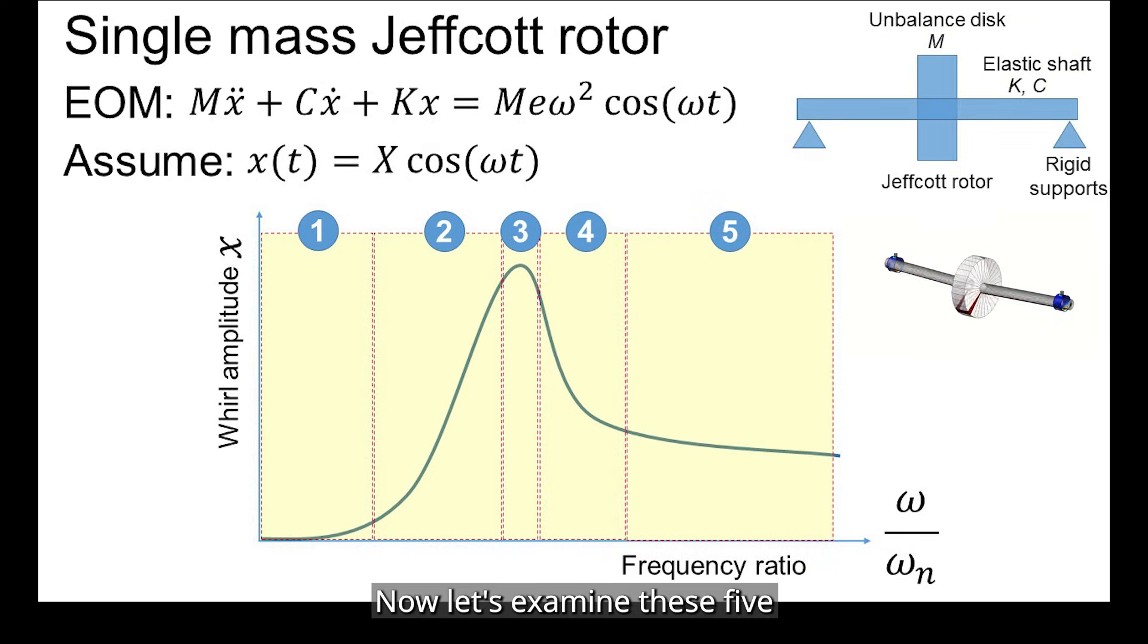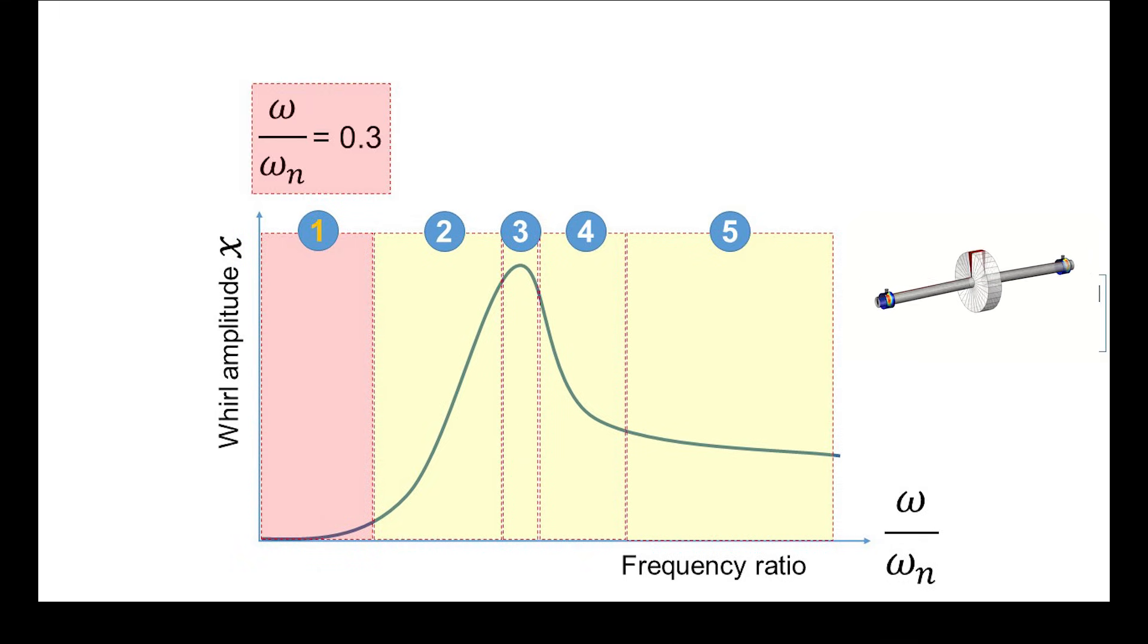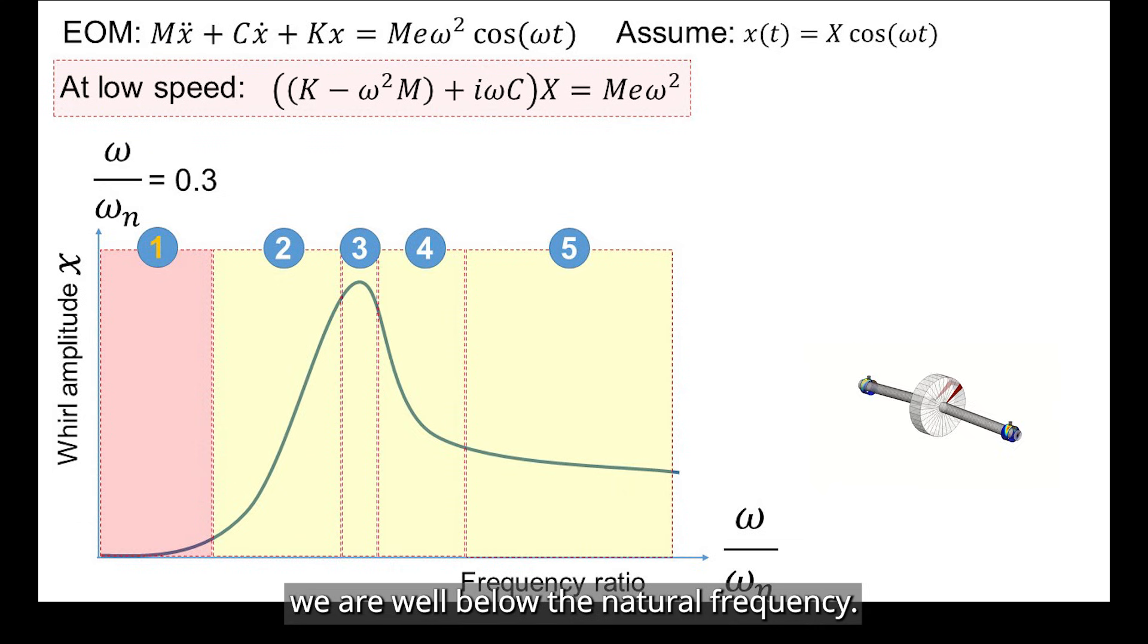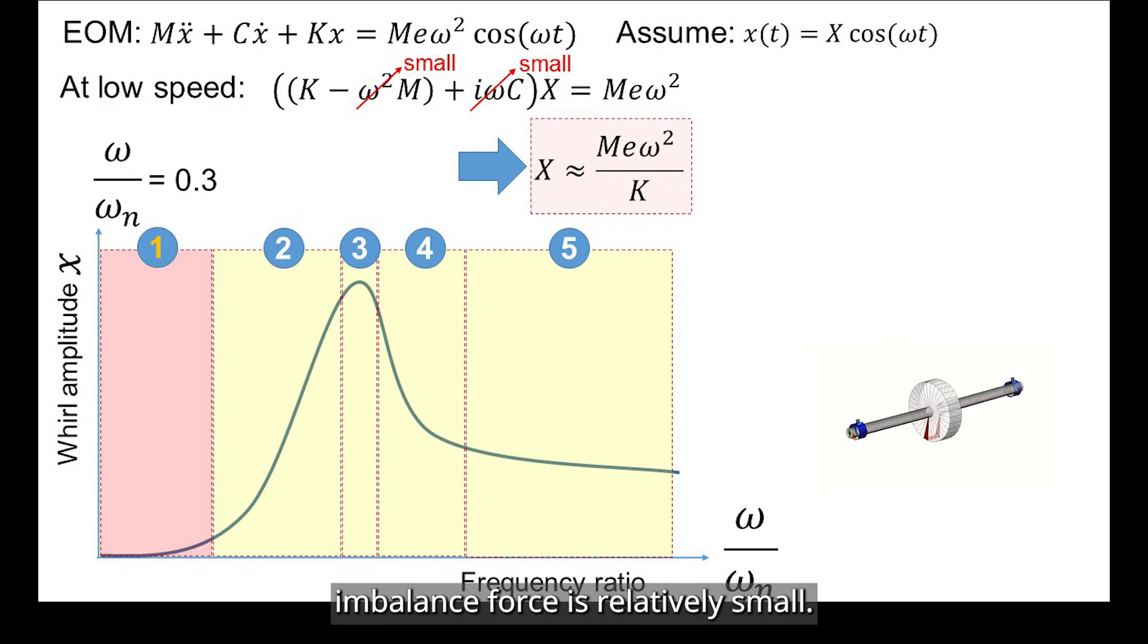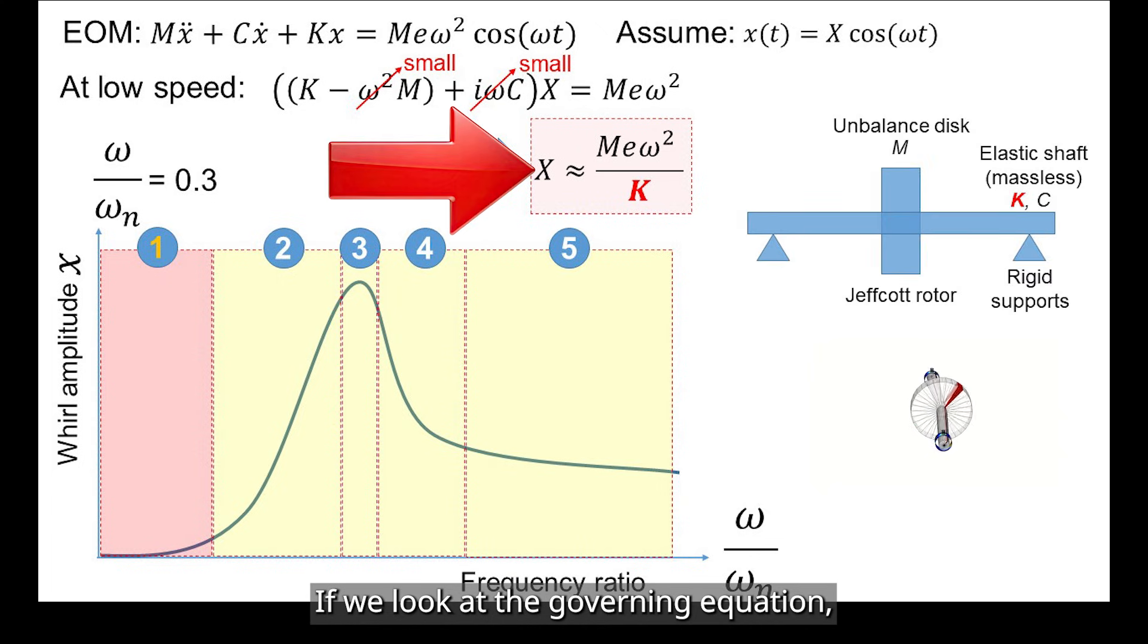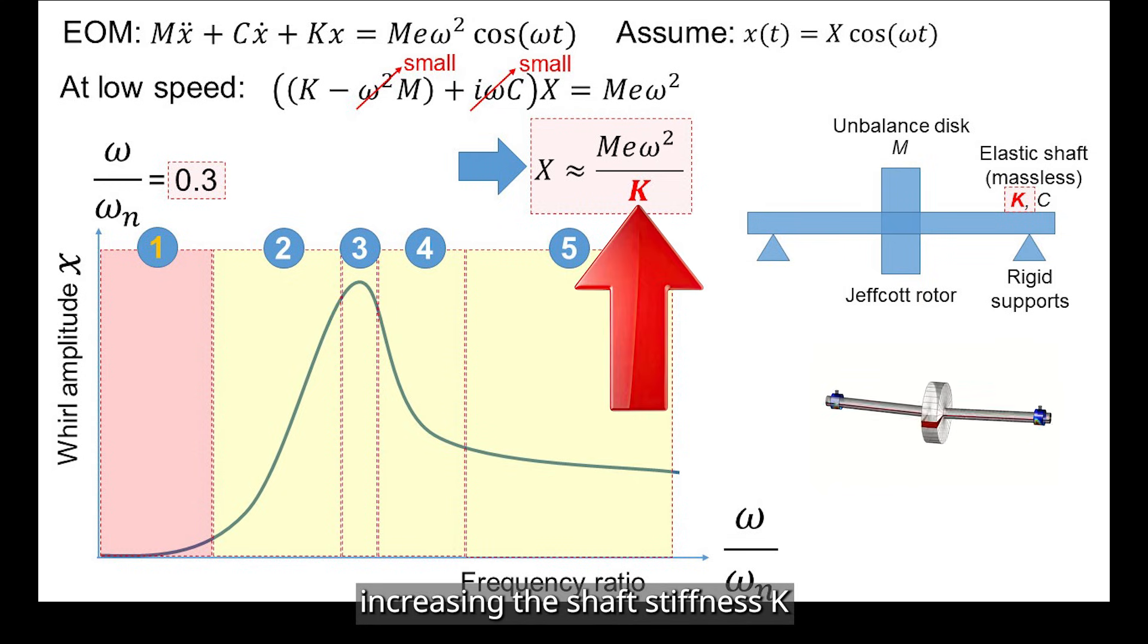Now, let's examine these five key regions one by one. At a frequency ratio of about 0.3, we are well below the natural frequency. Here, the rotor spins about its geometrical center, and the imbalance force is relatively small. If we look at the governing equation, it simplifies nicely, and we can clearly see that increasing the shaft stiffness K reduces the amplitude of motion.